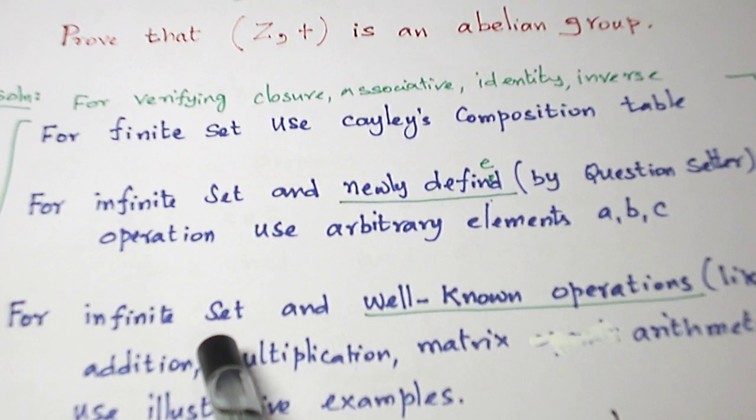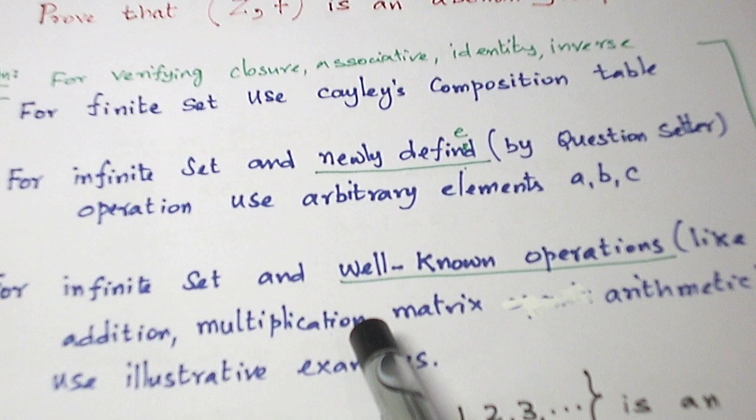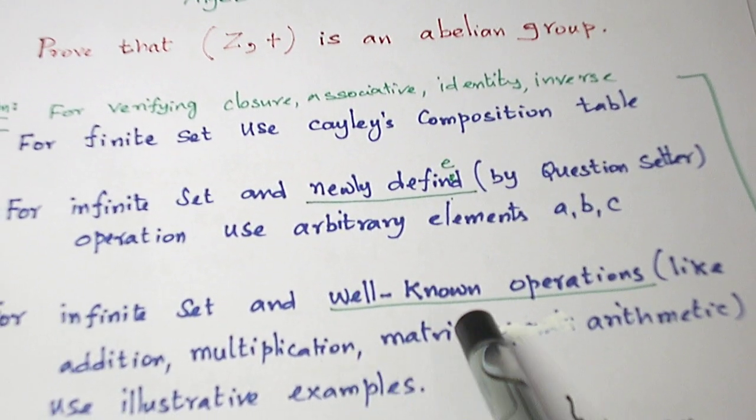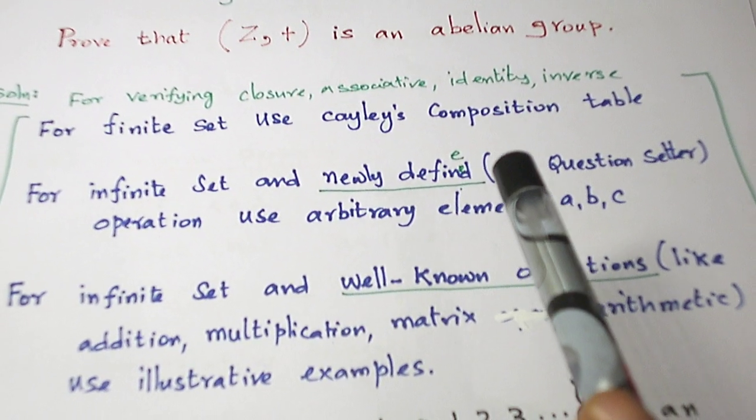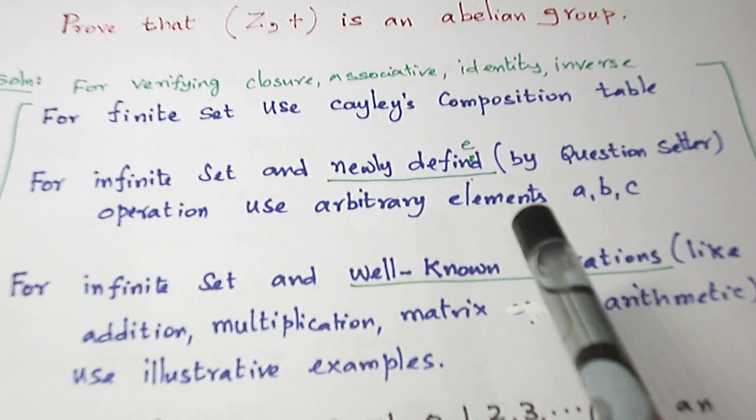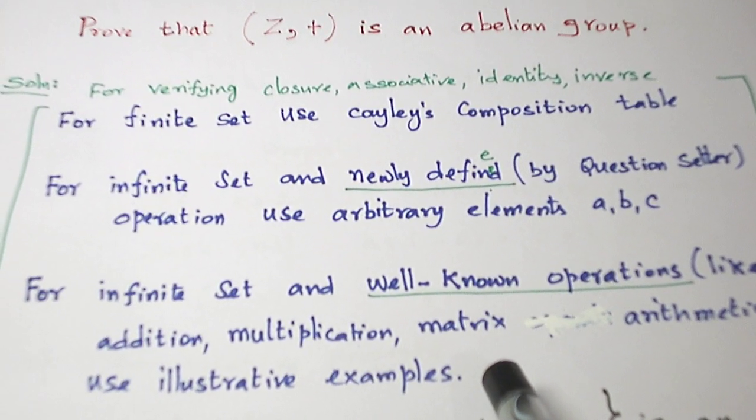Suppose the set is infinite but the operation is well-known operation like addition, usual multiplication, matrix addition, matrix multiplication. Then we cannot prove that property. These are all well-known properties. So we are going to illustrate them with examples.